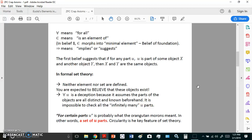For certain parts u is probably what the orangutan morons meant. In other words, a set of u parts. Circularity is the key feature of set theory.